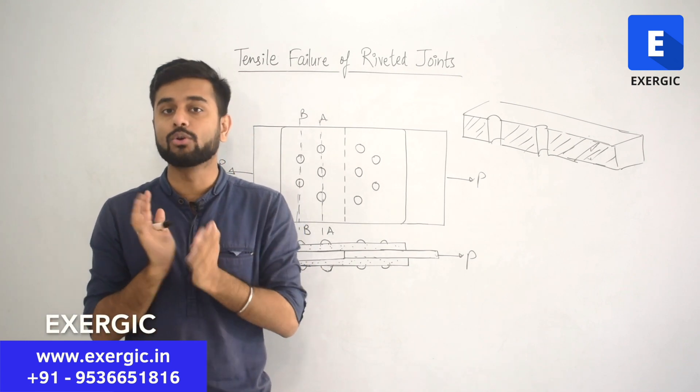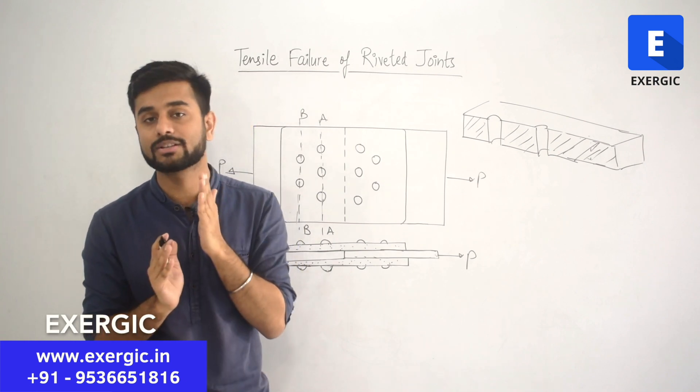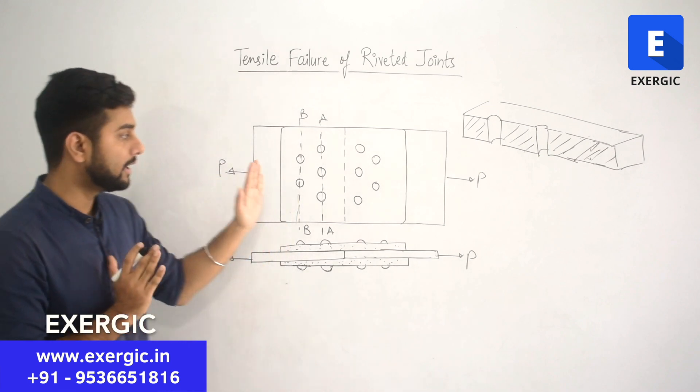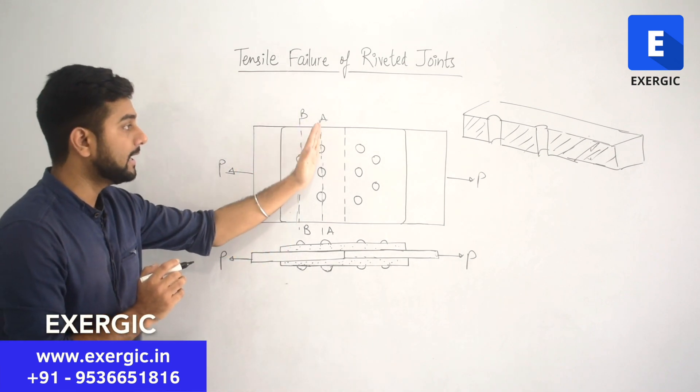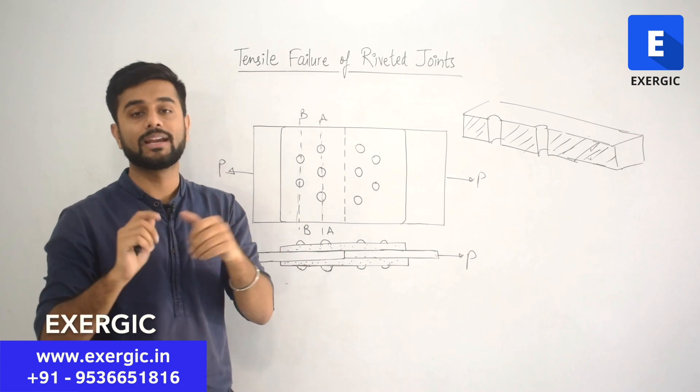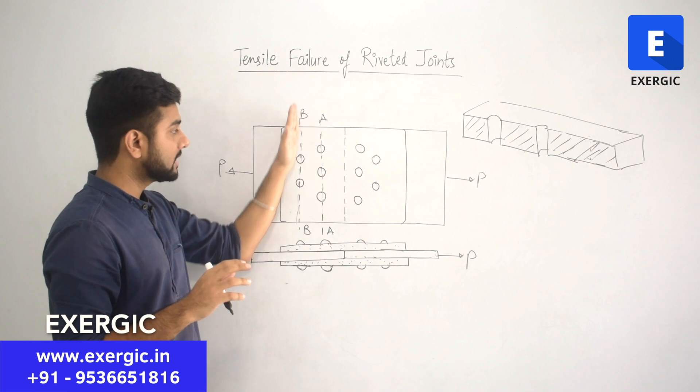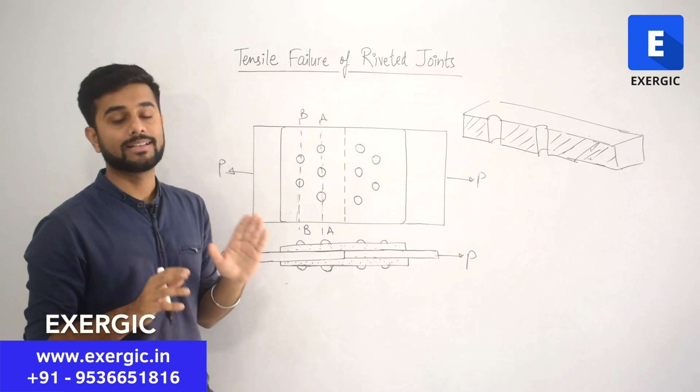As I have already told you, it's important for you to decide the section first in case of tensile failure. Here you see section AA has lesser area which is to be failed with tension as compared to the cross sectional area of the plate in section BB.